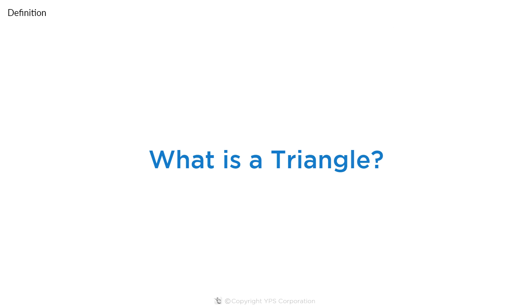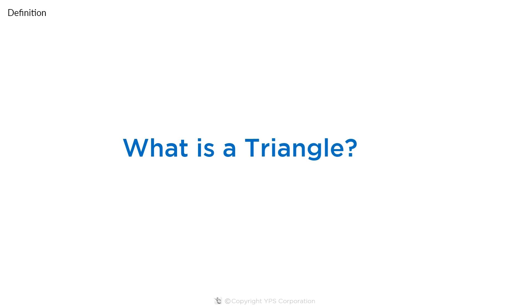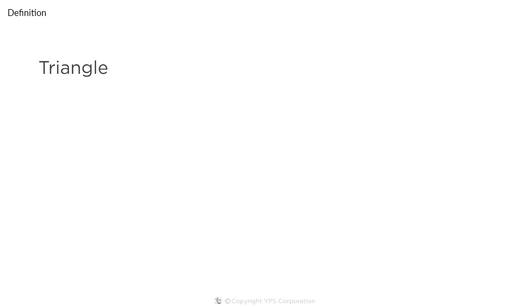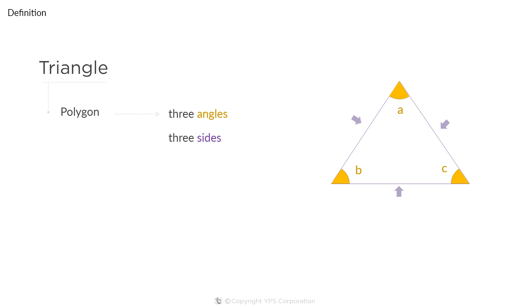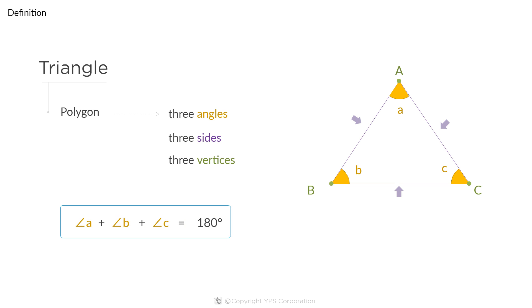Let us first define what a triangle is. In simple words, a triangle is a polygon that has three angles. But when does a closed figure have three angles? The answer is when it has three line segments joined end to end. Thus, we can say that a triangle is a polygon which has three sides, three angles, and three vertices. And the sum of all three angles of a triangle equals 180 degrees.